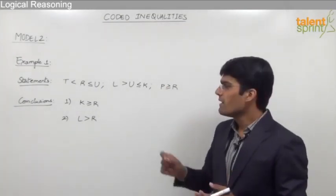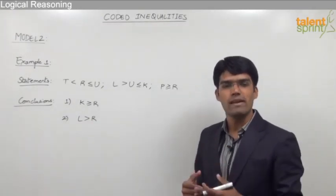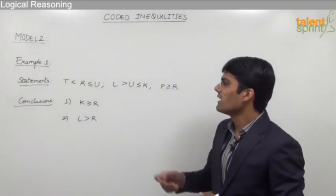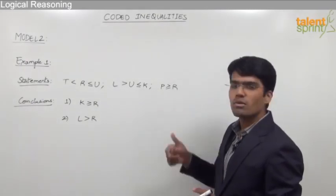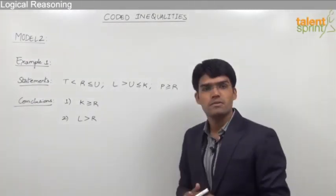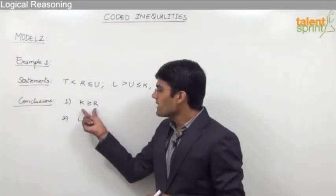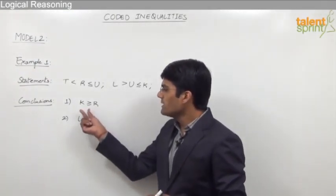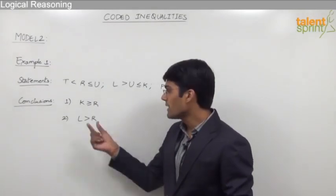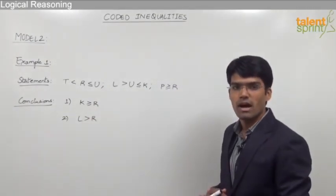As you can see, we don't have different symbols that need to be replaced with inequalities. Let us simply work out as discussed earlier and find out which conclusions are true. Looking at conclusion number one, the variables k and r are being compared, and the given conclusion is k ≥ r.